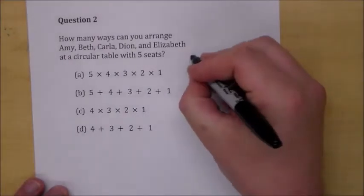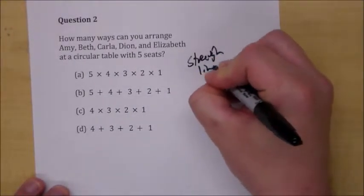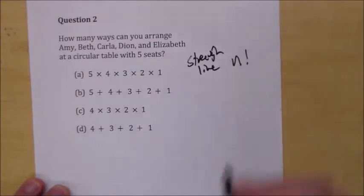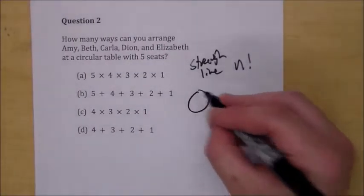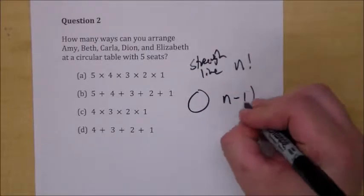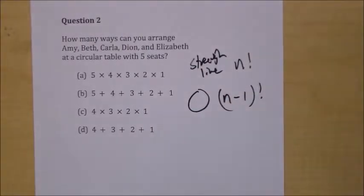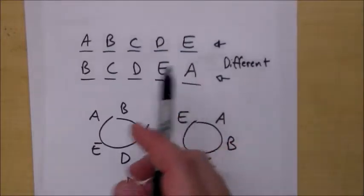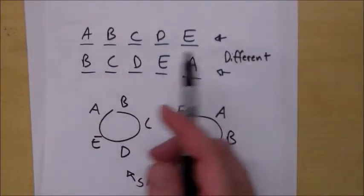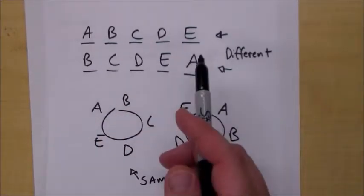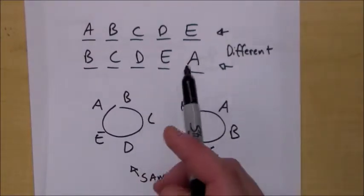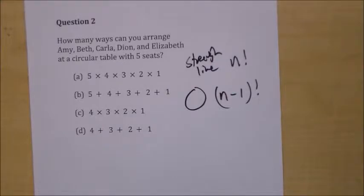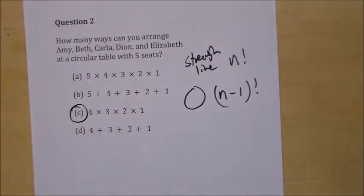If they're in a straight line, it would be n factorial — so 5 factorial for the last problem. If it's at a circular table, it's (n−1) factorial. Because you eliminate the one rotation, which really isn't a change. That's why it's (n−1) factorial. Just go with it — it'll be okay. The answer is C.